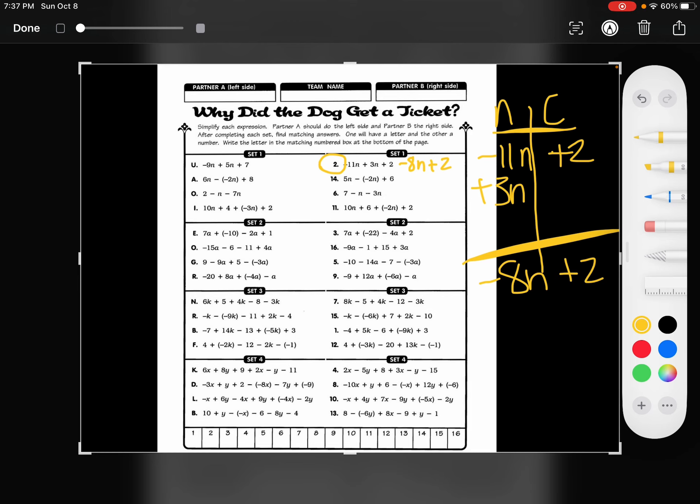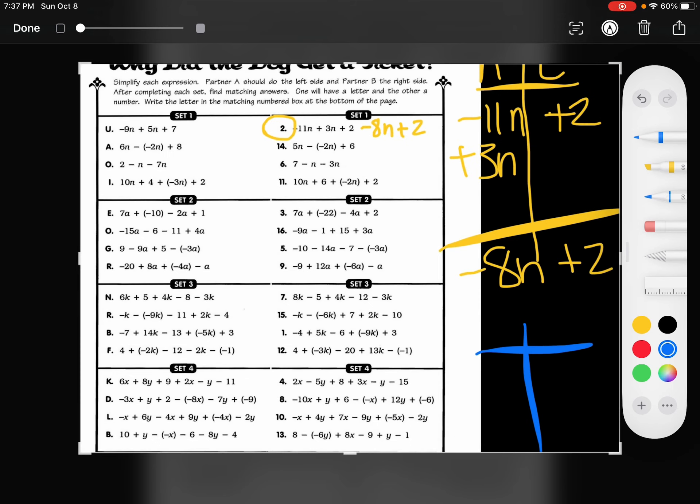Negative 8n plus 2. I'm going to write that down. And then it says that I have to match that with another answer. So let me see if I can figure that one out.